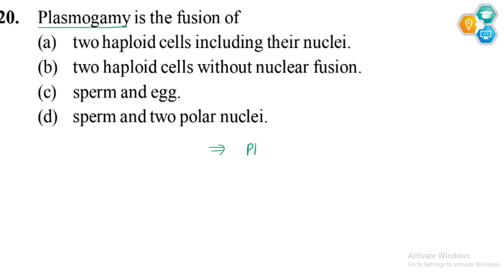Plasmogamy is the first stage of sexual reproduction. What happens in this stage? We have three stages of reproduction: plasmogamy, karyogamy, and then spore formation.